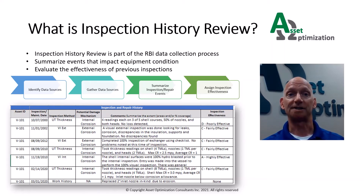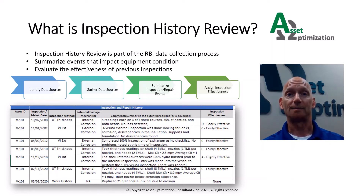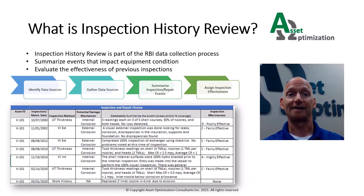Assigning inspection effectiveness using inspection strategies or effectiveness tables will make this process more consistent. Examples of levels of inspection effectiveness can be found in API 581, Part 2, Annex 2.C. API 580 requires that inspection effectiveness be considered when determining probability of failure.